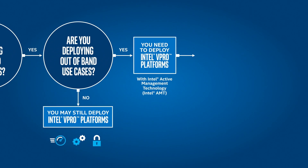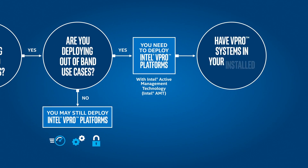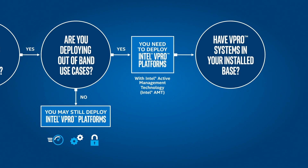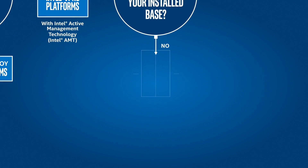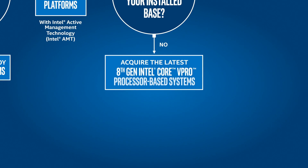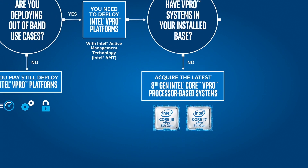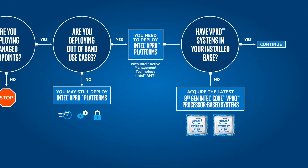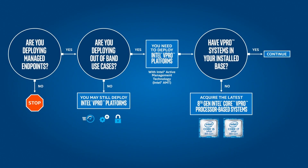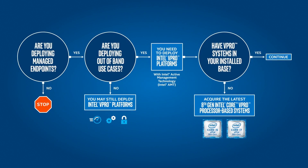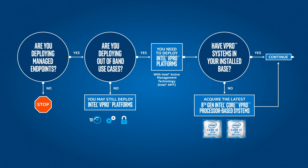The next question in this decision guide is: do you have vPro systems in your installed base? If you do not, Intel recommends deploying the latest 8th Gen Intel Core vPro processor-based systems. Intel AMT capabilities have been largely consistent across generations of the vPro platform, and you should be able to activate and manage vPro systems using a consistent set of tools and technologies, as described in the steps that follow.